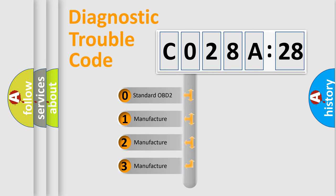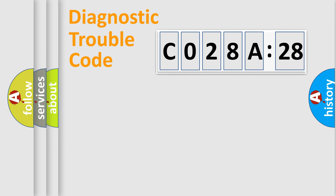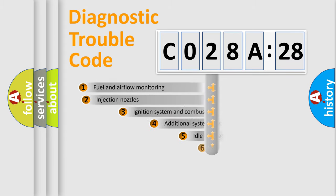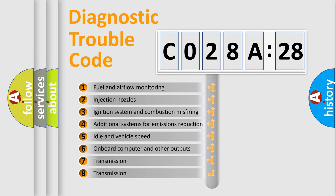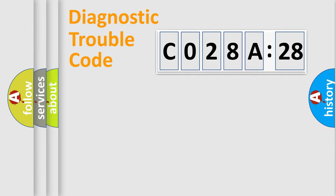If the second character is expressed as zero, it is a standardized error. In the case of numbers 1, 2, 3, it is a manufacturer-specific error. The third character specifies a subset of errors. The distribution shown is valid only for the standardized DTC code. Only the last two characters define the specific fault of the group.